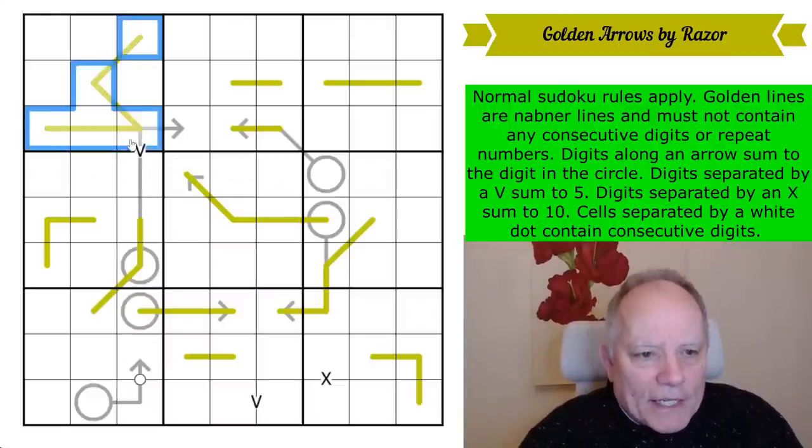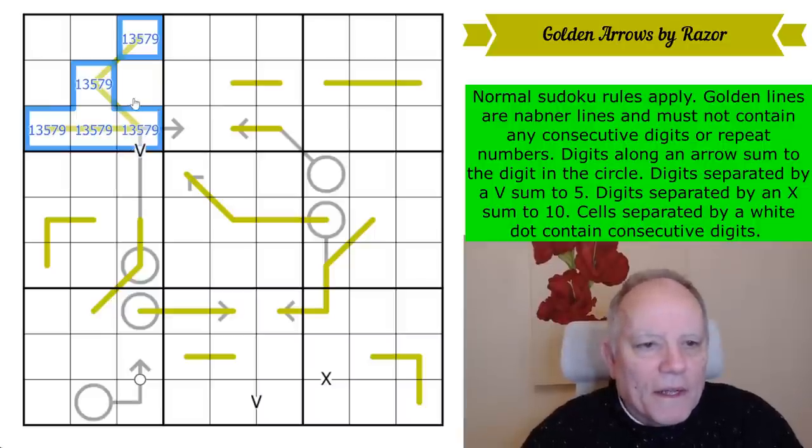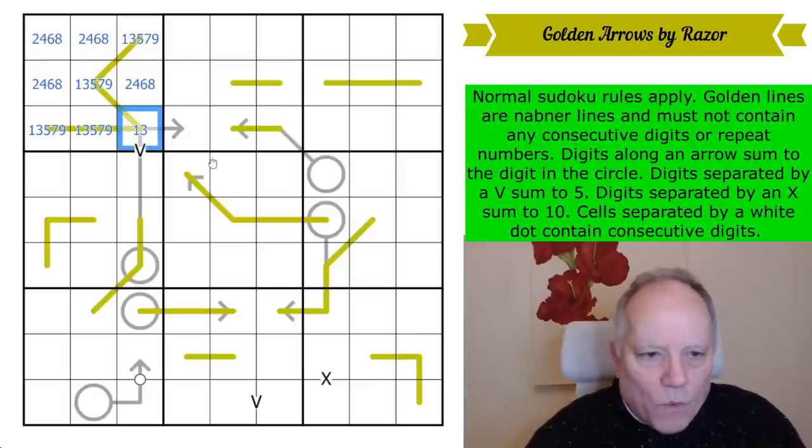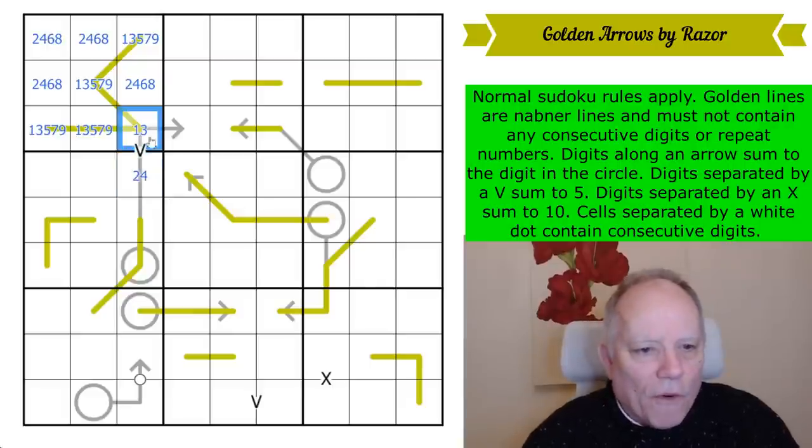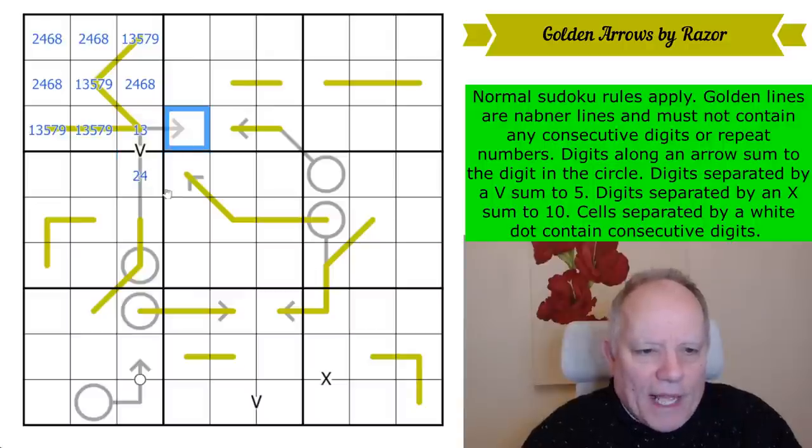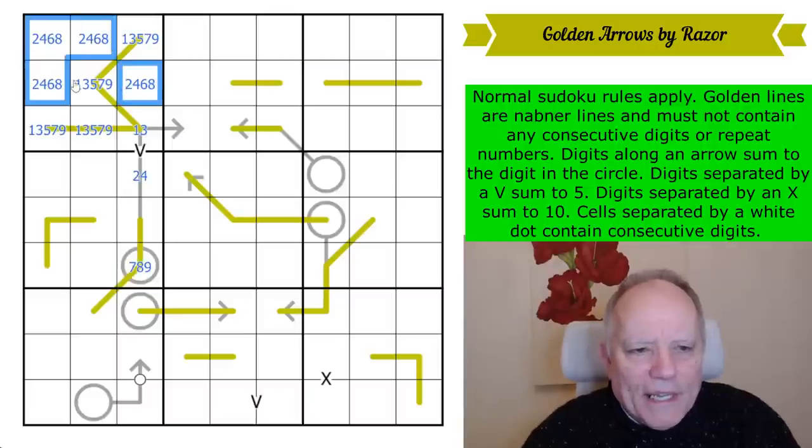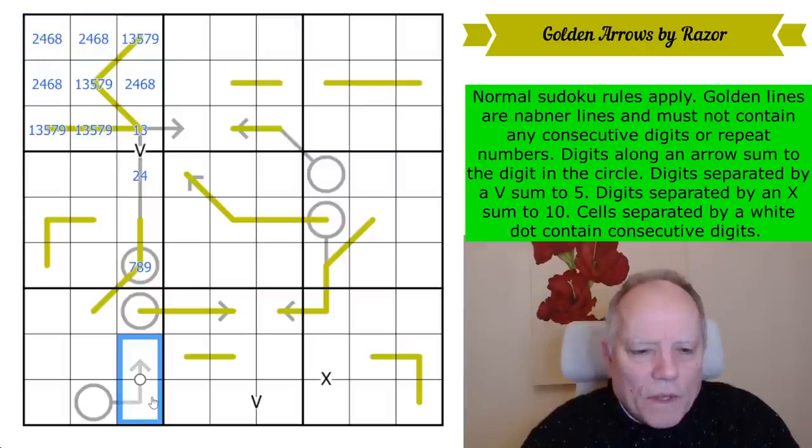So a five cell NABNA line is a nice introduction. That has to be one, three, five, seven, nine because that's the only way you can get five digits on a line - use all the odds. So this one on the V is obviously one or three connecting to a two or four, and they obviously add up to five. We're going to add those two cells which must be one each at a minimum and get to at least seven here. So this number is seven, eight, or nine.